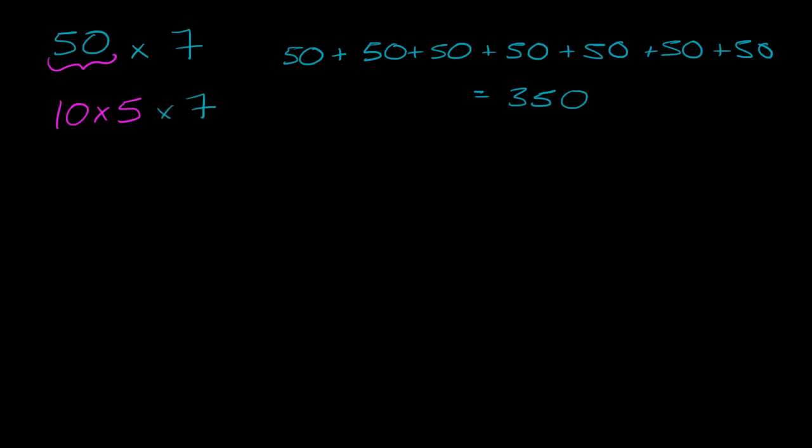Once again, the order that we multiply does not matter. So we can multiply the 5 times the 7 first. We know that that is 35, and we're going to multiply that times 10. 10 times 35, well, we're just going to stick a 0 at the end of the 35. It's going to be equal to 350.